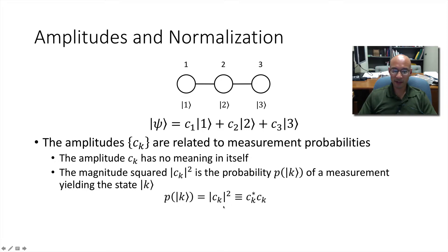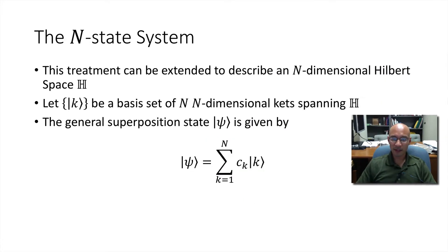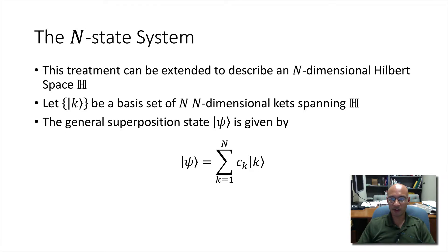So here's the magnitude squared, and it's defined as CK star times CK, where CK star means it's the complex conjugate of CK. For this probabilistic interpretation to hold, we require that physical states be normalized so that all the probabilities sum to unity. So mathematically, we write that like this. And this treatment can be extended to describe an n dimensional Hilbert space.